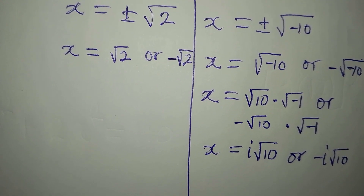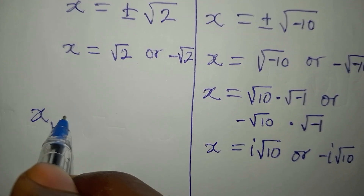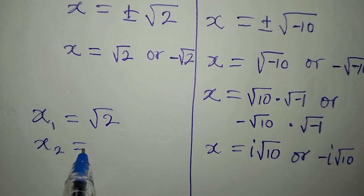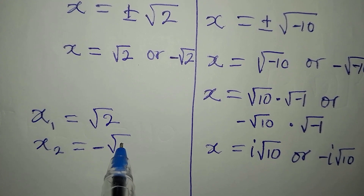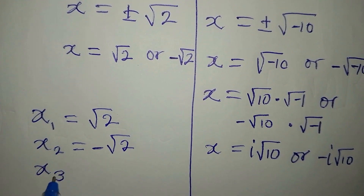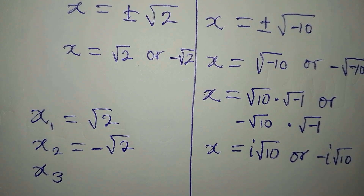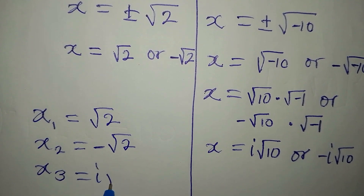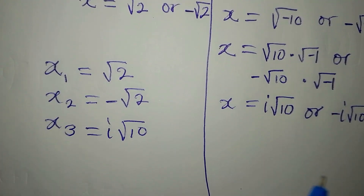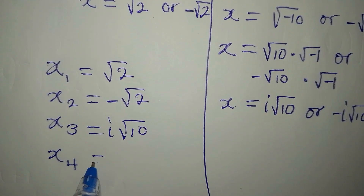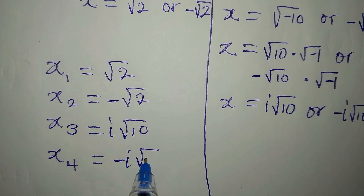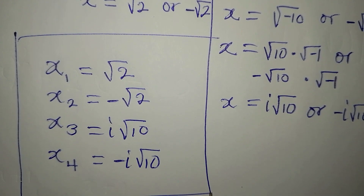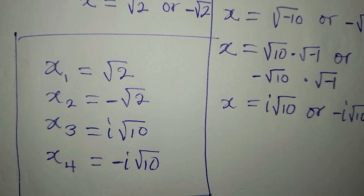Bringing all four solutions together: x₁ equals root 2, x₂ equals negative root 2, x₃ equals i root 10, and x₄ equals negative i root 10. By this, we have solved the equation completely. Thank you for watching.